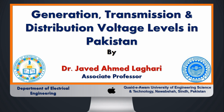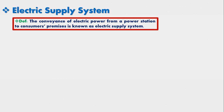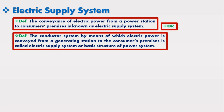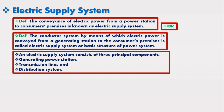Electric supply system can be defined as the conveyance of electric power from a power station to consumer's premises, also known as electric supply system. It can also be defined as the conductor system by means of which electric power is conveyed from a generating station to the consumer's premises. An electric supply system consists of three principal components: generating power stations, transmission lines, and distribution system.